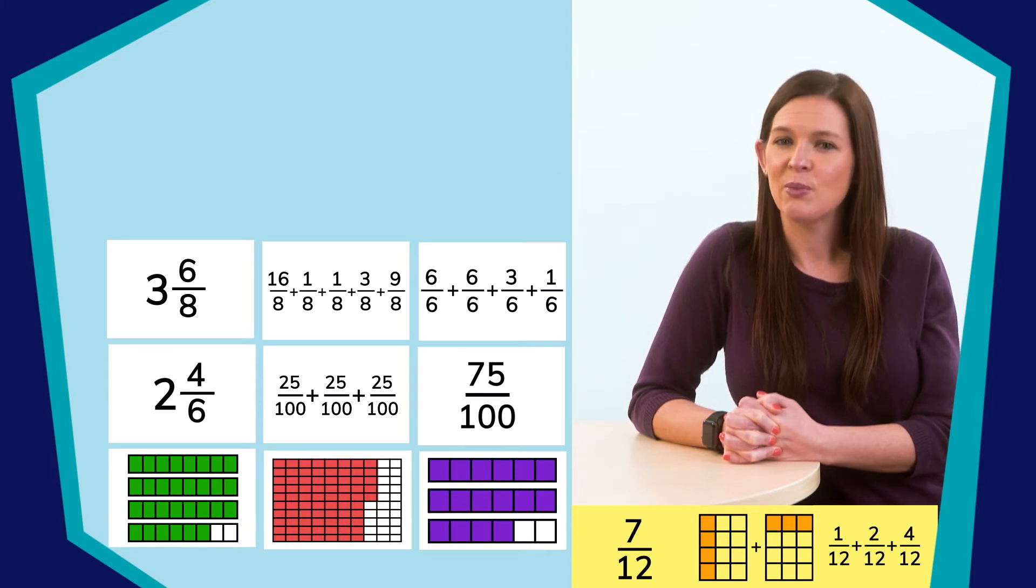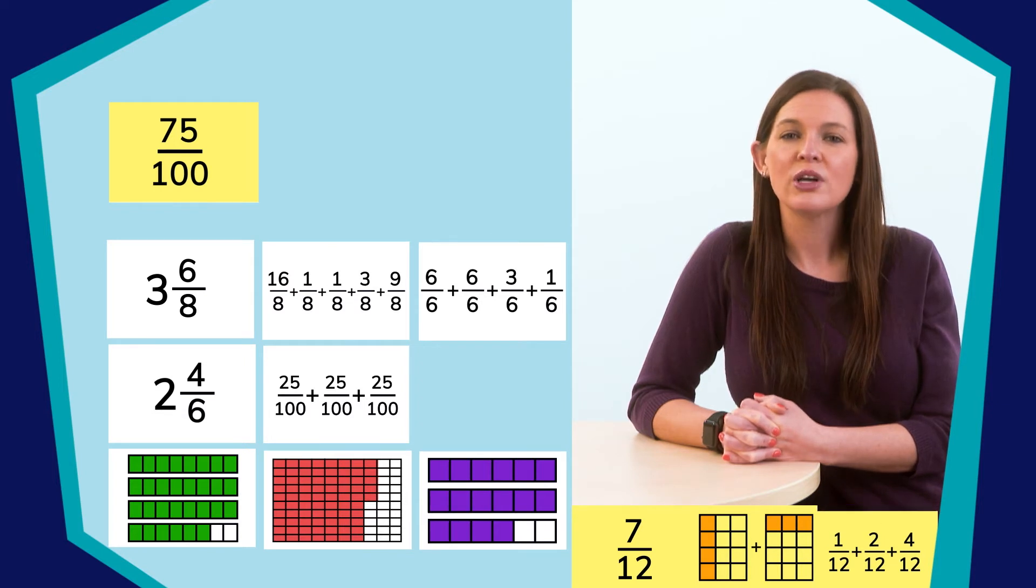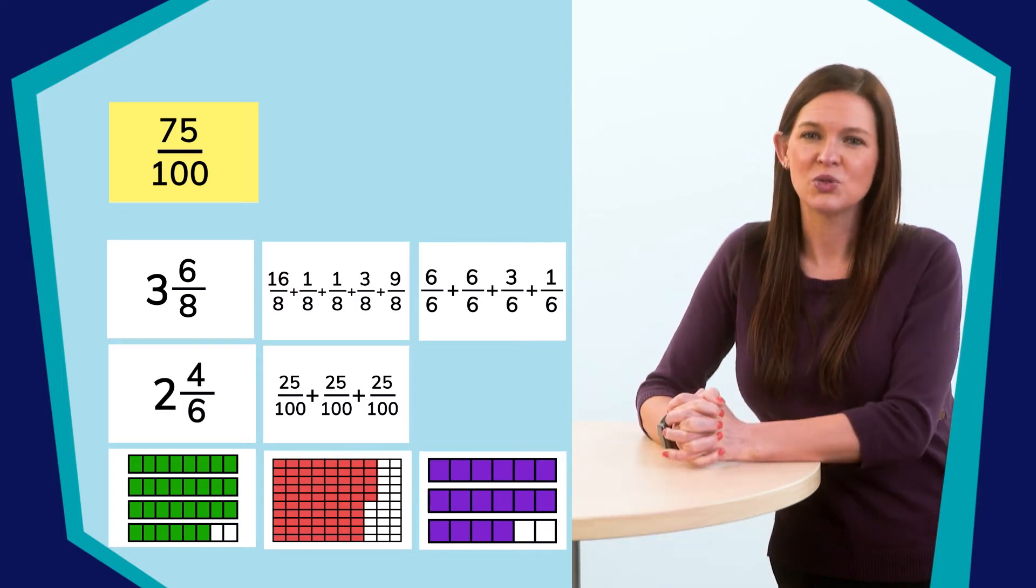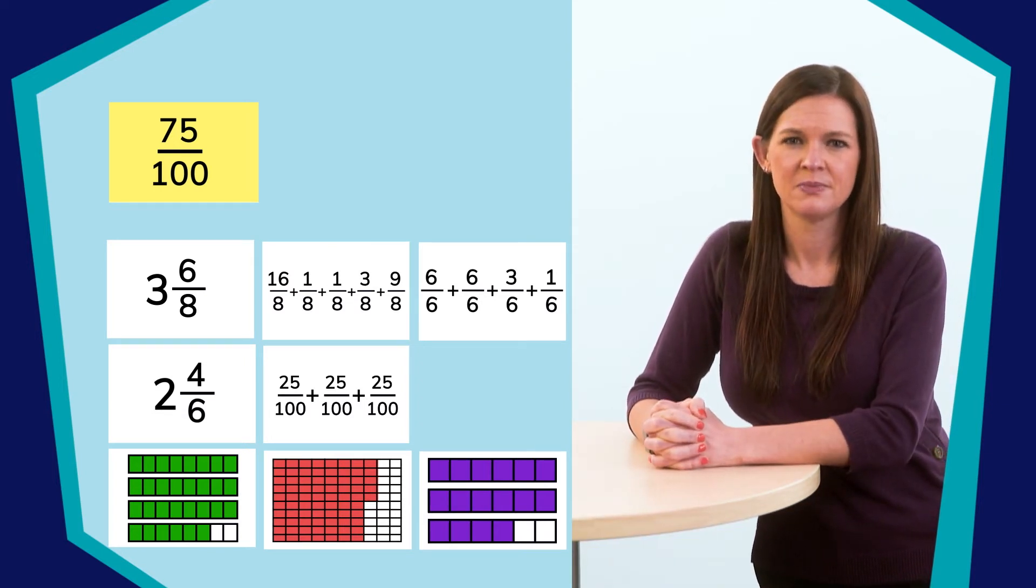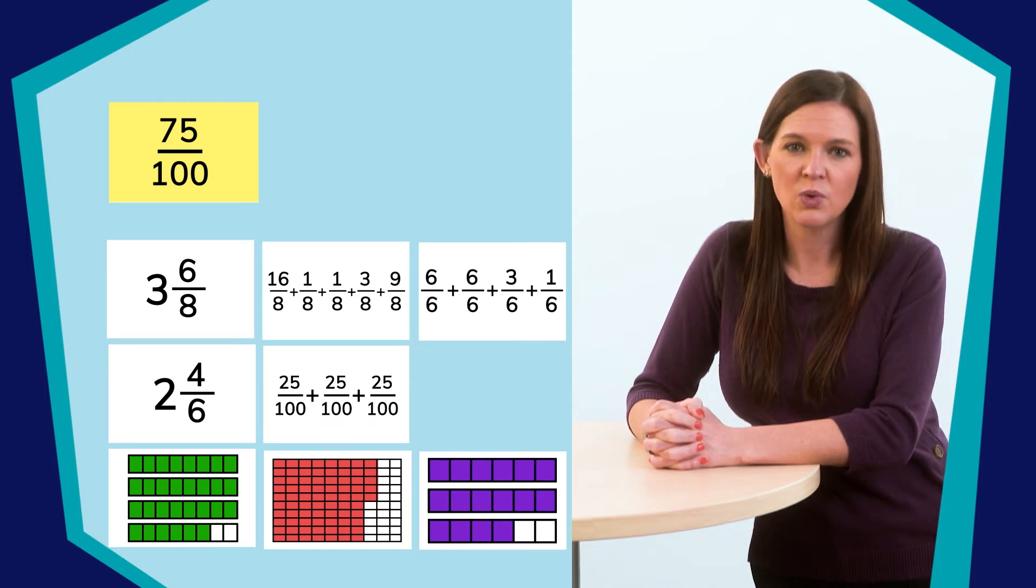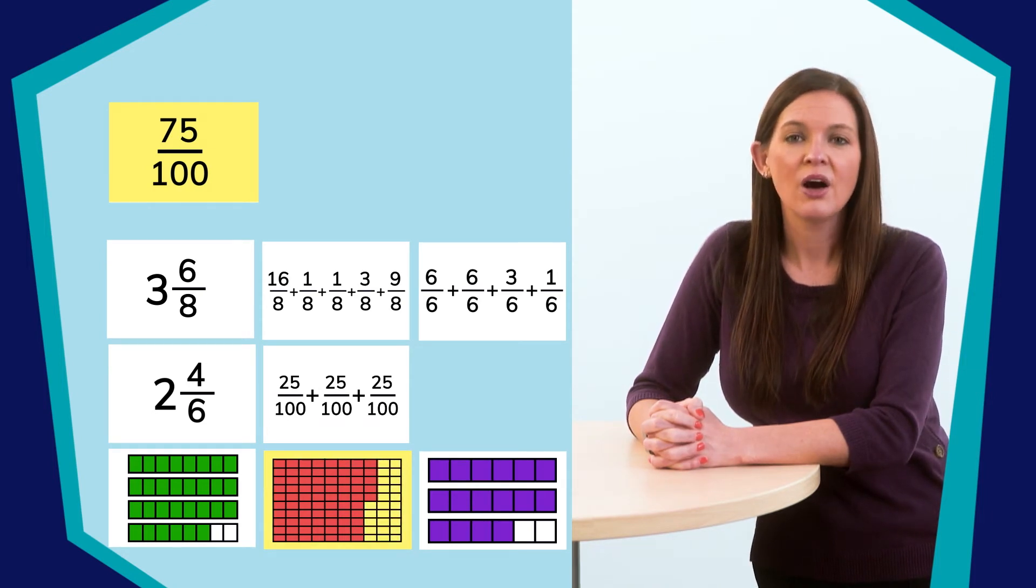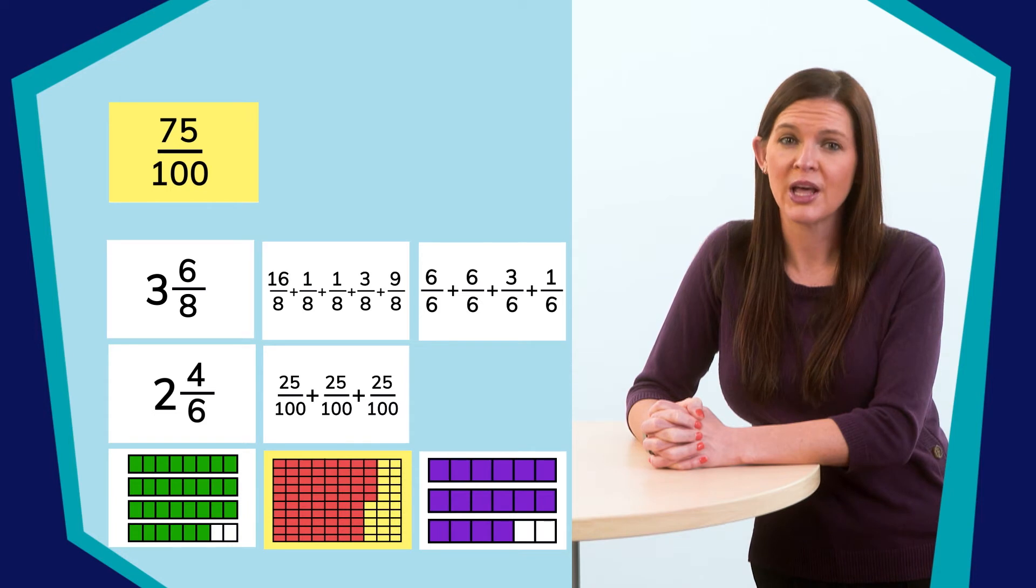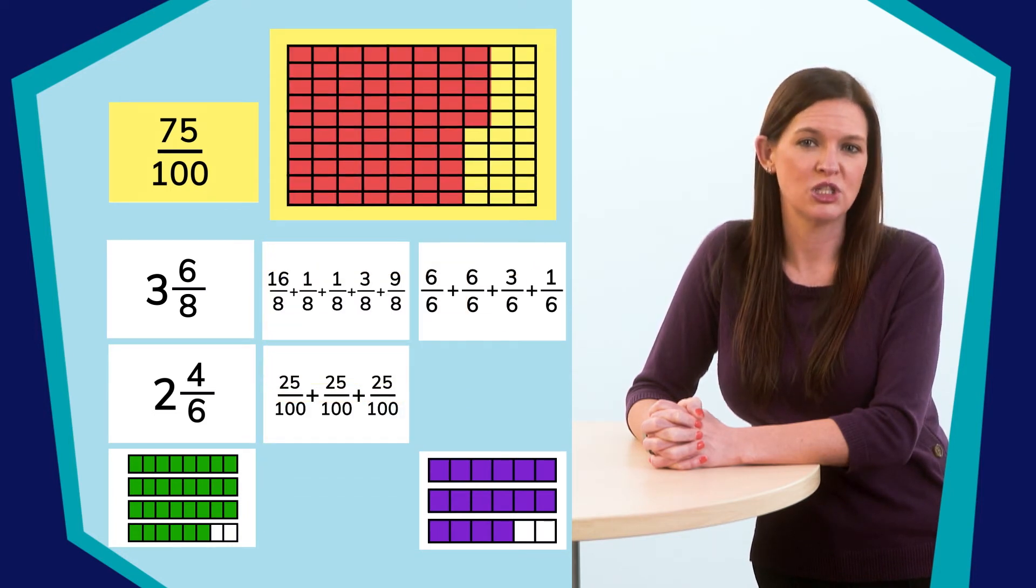I say we match up the 75 hundredths fraction to its model and expression next. Looking at the models, can you tell which one has hundredths? Absolutely, it's the one with the red colored in. The other two are showing whole numbers, and there are not nearly enough pieces. Let's count just to be sure.